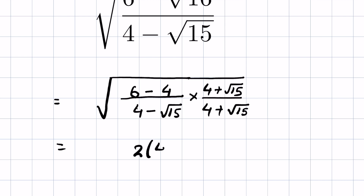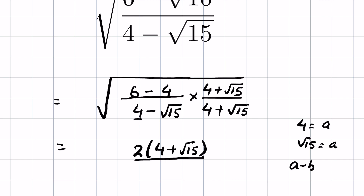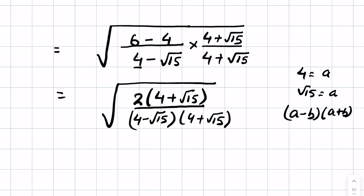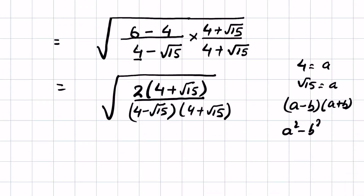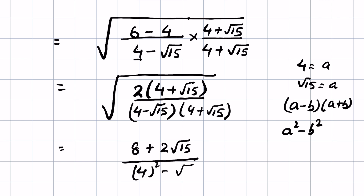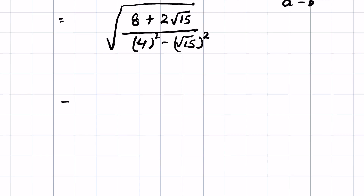Now, 6 minus 4 is 2, so the numerator becomes 2 times (4 plus square root of 15). If we consider 4 as 'a' and square root of 15 as 'b', the denominator is in the form (a minus b)(a plus b), which equals a squared minus b squared. So the numerator is 2 times (4 plus square root of 15), giving 8 plus 2 times square root of 15.